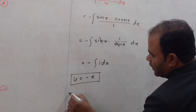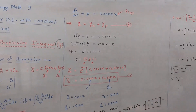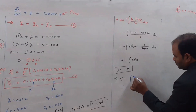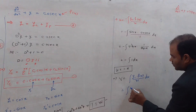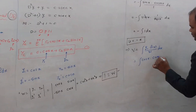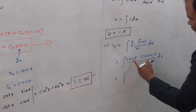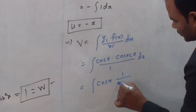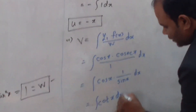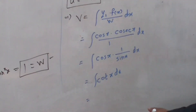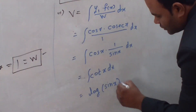Now we find v. The equation for v is integration of y1·f(x)/w dx. Substituting: v = ∫(cos x · cosec x / 1) dx = ∫(cos x / sin x) dx = ∫cot x dx. The standard integral of cot x is log(sin x). So v = log(sin x).